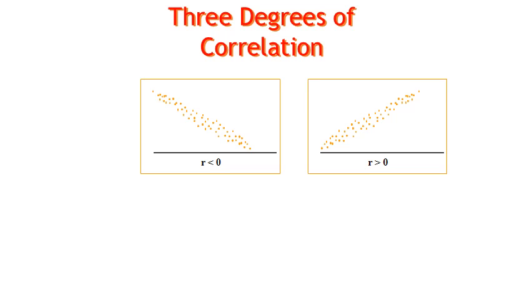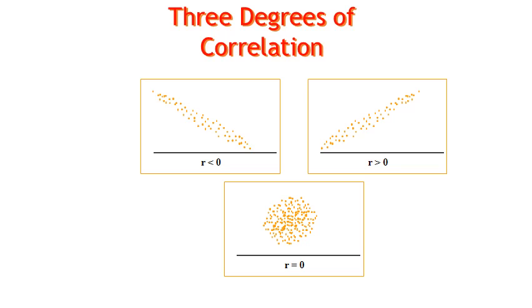If we were to draw a scatter plot we would get degrees like this. So this is a negative linear relationship, positive linear, and no relationship.